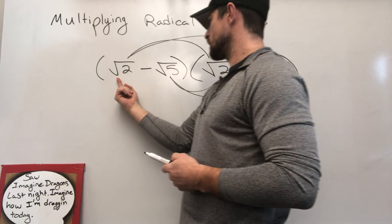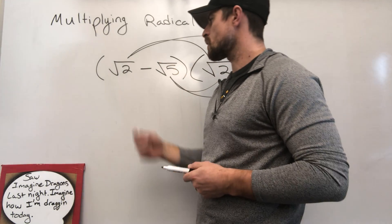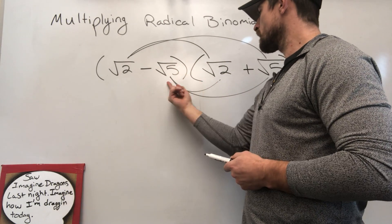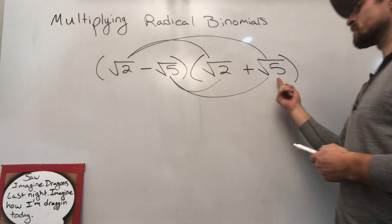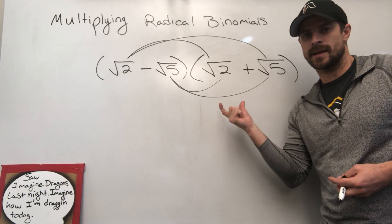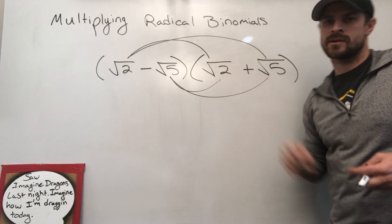So our first term in each binomial being multiplied, our outside terms, our inside terms, and our last terms. Okay, you should already know the FOIL method by now if you're going into this type of stuff. So now you're just doing the FOIL method but with radicals.